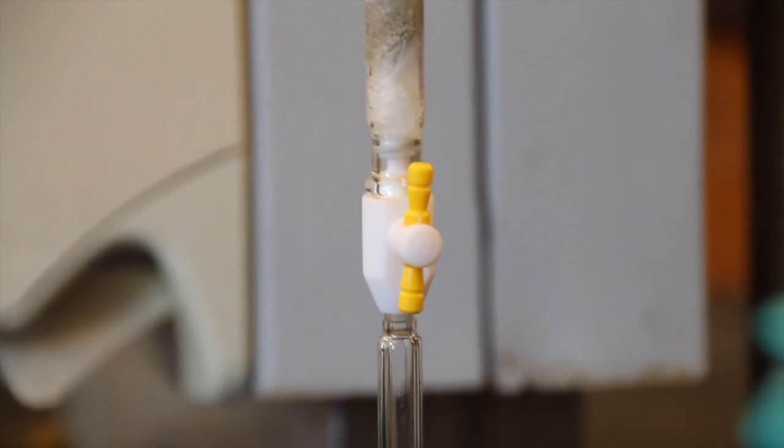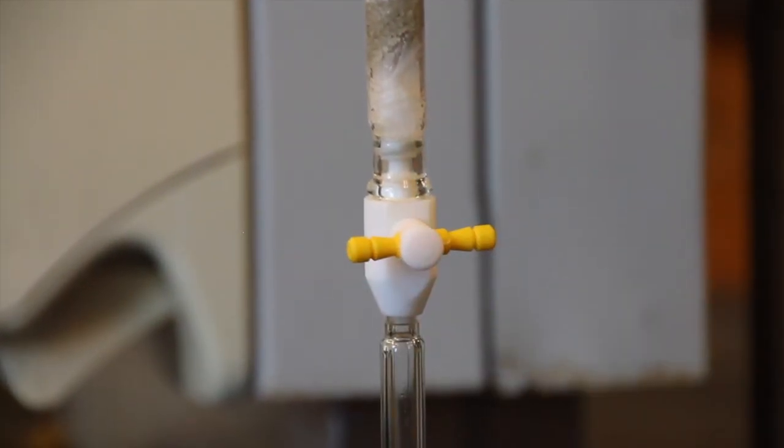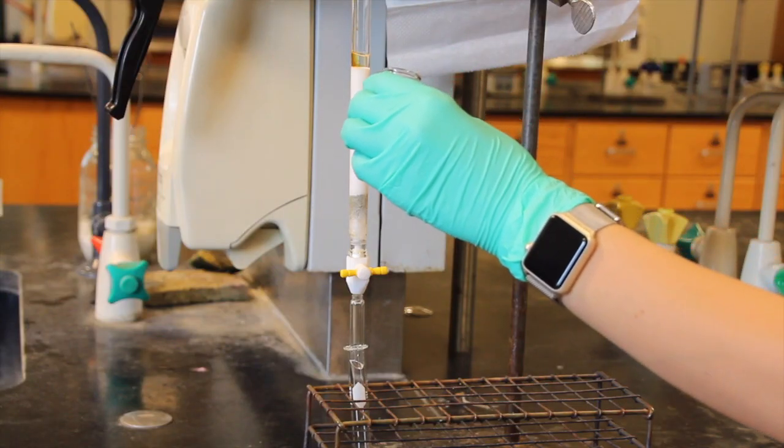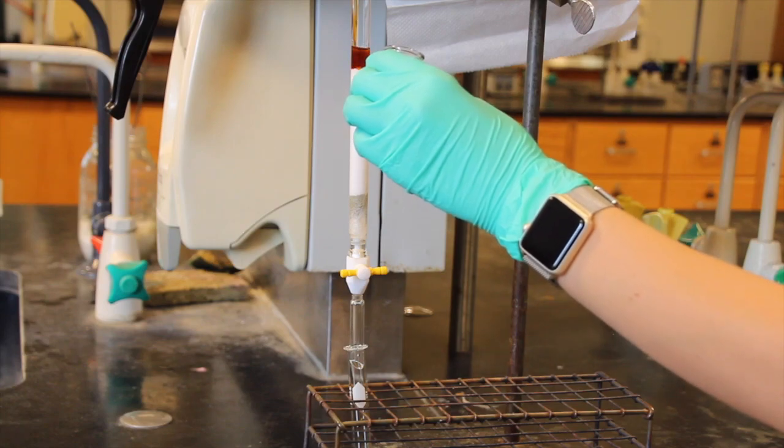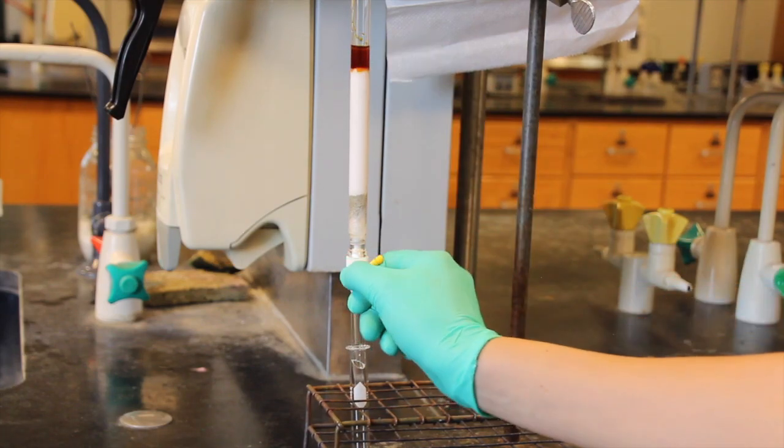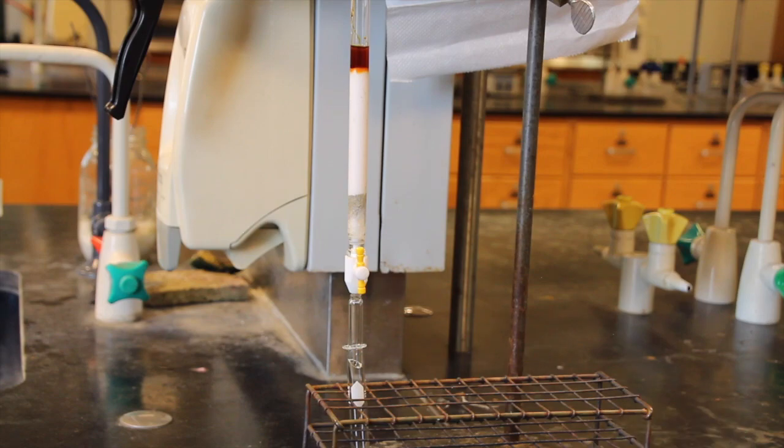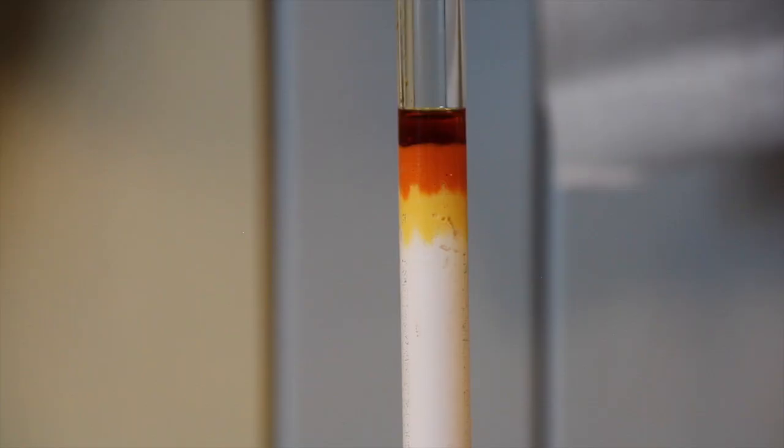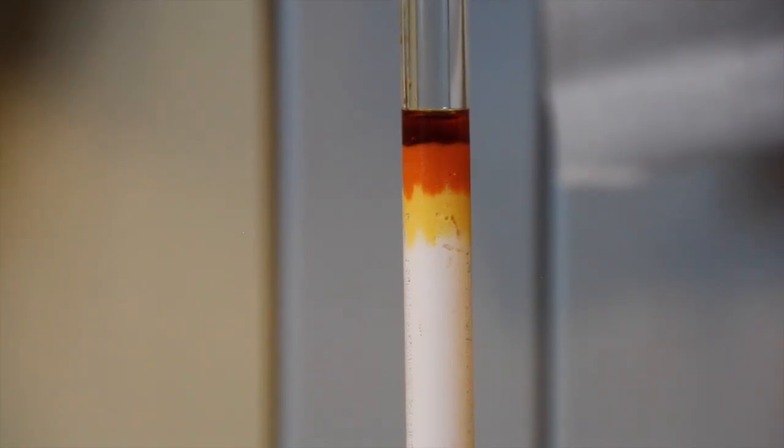Next, close the stopcock and proceed directly to the next step. Use a pasture pipette to transfer the unknown solution to the top of the column. Open the stopcock at the bottom of the column and allow the sample to sink into the alumina. Start collecting the first fraction as soon as you start applying the solution to the column. When the sample is absorbed into the alumina, close the stopcock.